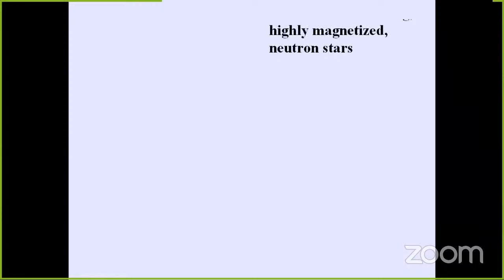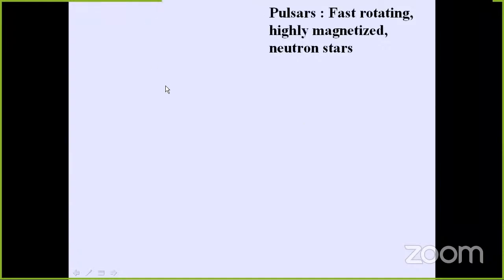Is it fair to assume that you people are already introduced to pulsars? If anybody thinks that you're not, please raise your hand. I don't see any hands raised, so I'll take that as everybody is at least introduced to pulsars, if not to the greater details. So pulsars, as we know, are highly magnetized, fast rotating neutron stars, and they have a well-defined rotation axis which might be oriented arbitrarily in the plane of the sky. It doesn't have to be vertical as is shown here.